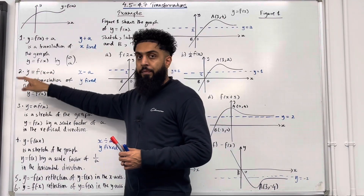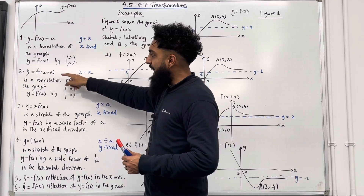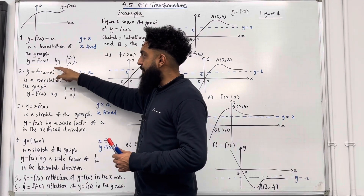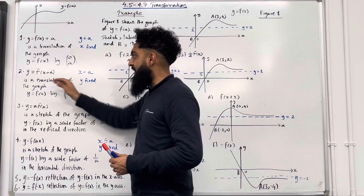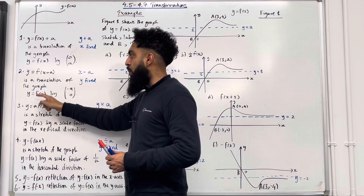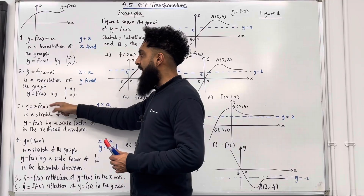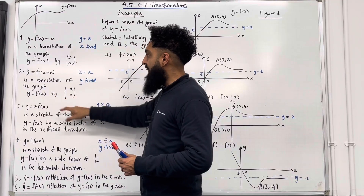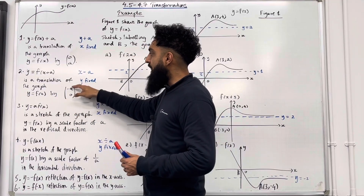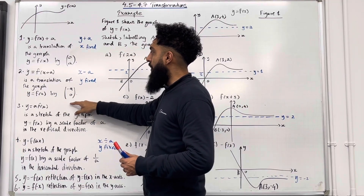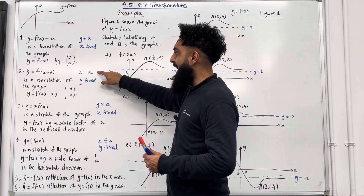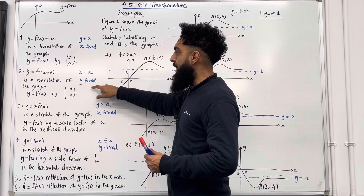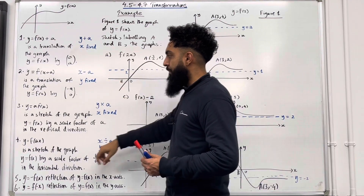Number 2: y equal f of x plus a, where the plus a is inside the bracket, is a translation of the graph y equal f of x by the vector (−a, 0). In other words, you take your x coordinate and you subtract a, keeping y fixed.